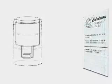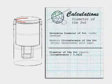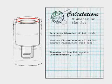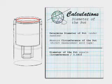Determine the diameter of the pot under the handles. Measure the circumference of the pot with a measuring tape. The diameter of the pot equals the circumference divided by 3.1416.